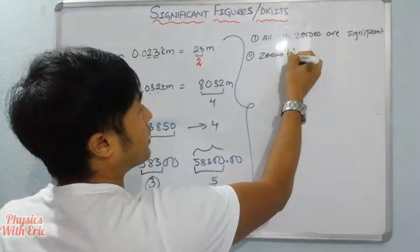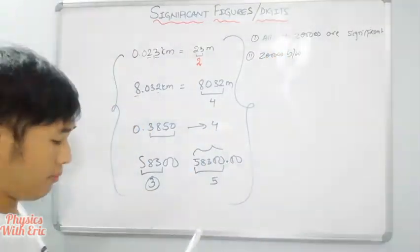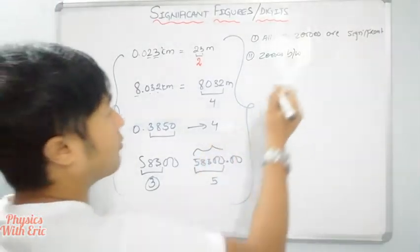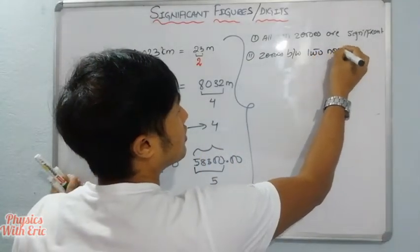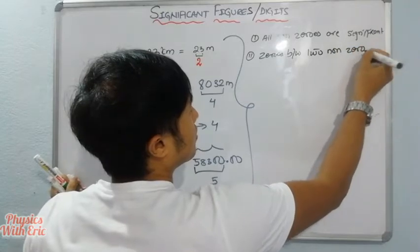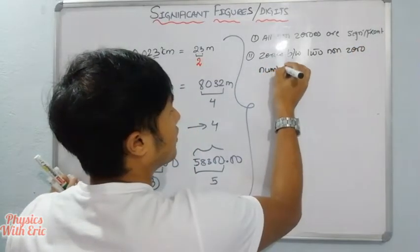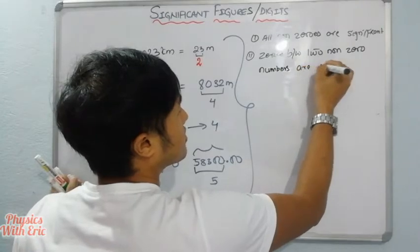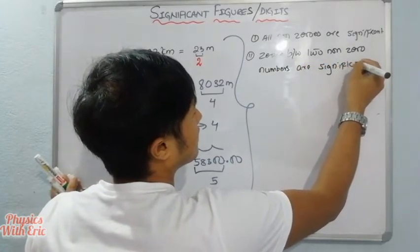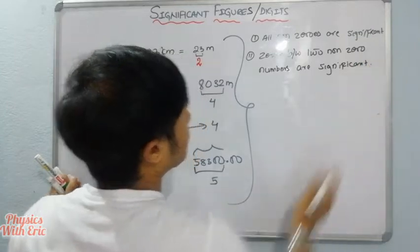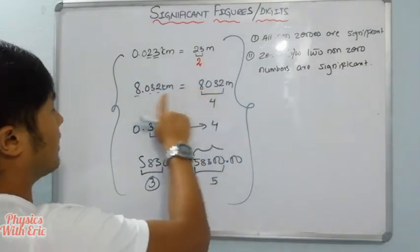Rule two: zeros between two non-zero digits are significant. For example, in a number like 8.032, the zero between 8 and 3 is significant.